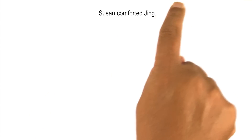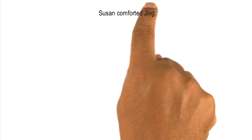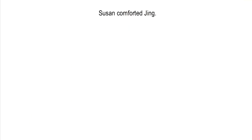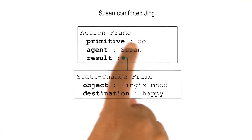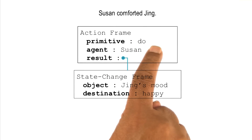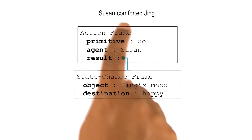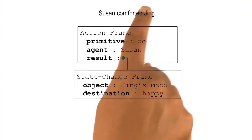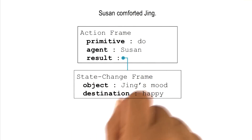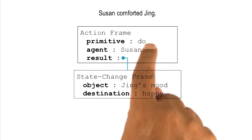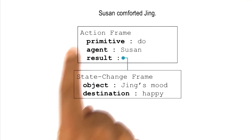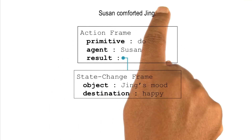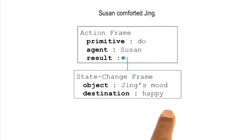We want the AI agent to do the same kind of reasoning without knowing what exactly is the comforting action. So we may have a generic primitive action of 'do.' We'll use it whenever the AI agent is unable to decide what exactly is the primitive action. The AI agent will simply say Susan did something that made Jing's mood happy — and this is a pretty good interpretation of the sentence.